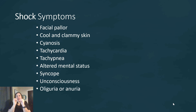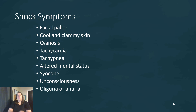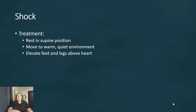Altered mental status can progress to syncope — fainting or unconsciousness. One of the best indicators of adequate organ perfusion is urine output. Oliguria or anuria — little or no urine production — is a key sign that a patient may be going into shock.